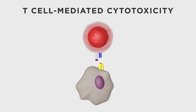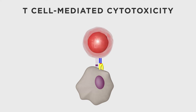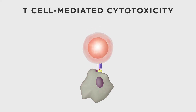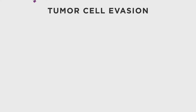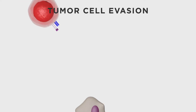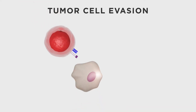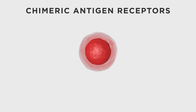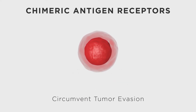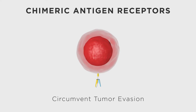CD8-positive CTLs identify target cells for destruction based on surface marker expression. Tumor cells can evade CTLs by preventing that receptor interaction. Scientists are attempting to circumvent tumor evasion by engineering special receptors targeting tumor-specific antigens.